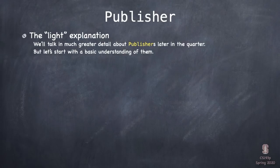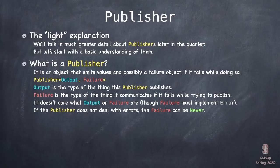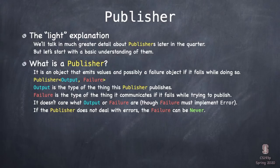Publisher — a very deep topic. Publisher's declaration looks like Publisher<Output, Failure>. The output is some type this publisher periodically emits, and the failure is the type of information it gives if it fails to publish — for example, if it's publishing something over the network and the connection goes dead. A common failure type is Never, meaning this publisher never fails — it just publishes its values continuously without anything that could go wrong.